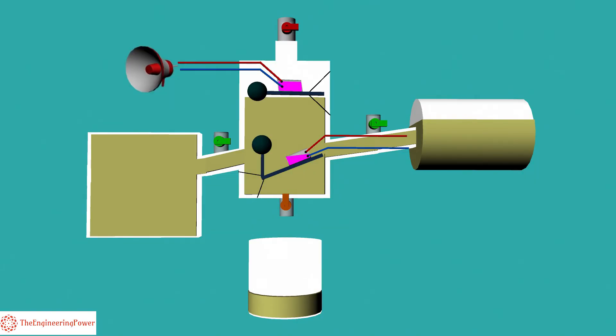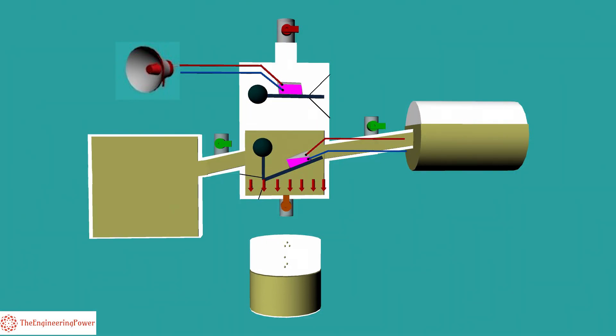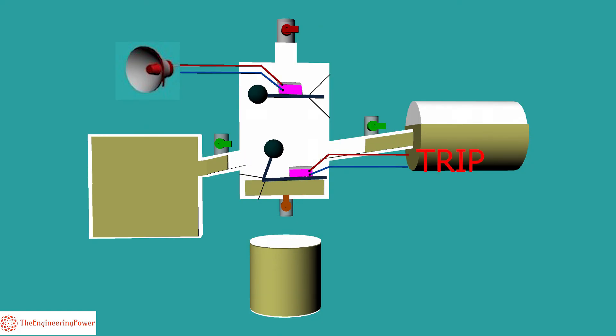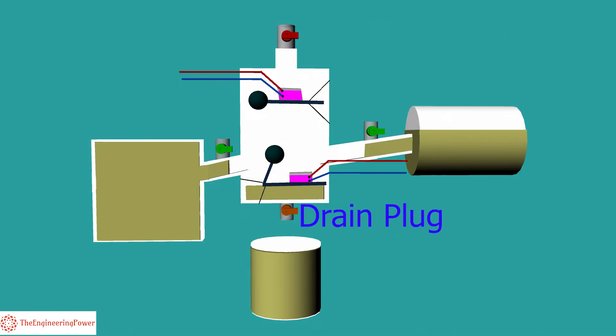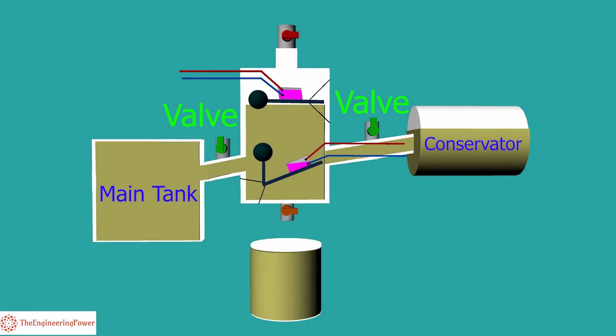First, the alarm circuit will be operated due to the oil level going down. When oil continues to be drained, the trip function will be operated. After testing, the drain plug is closed and valves from the main tank and conservator side are opened so that the relay is filled with oil again.